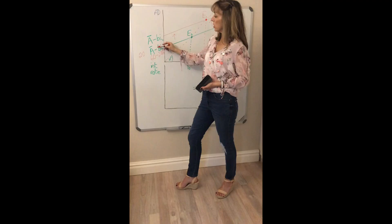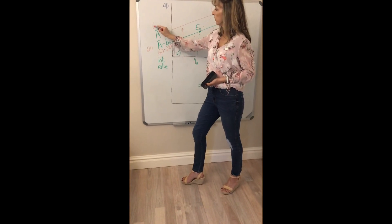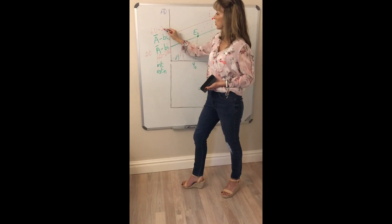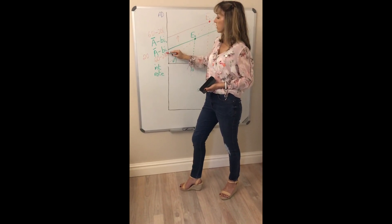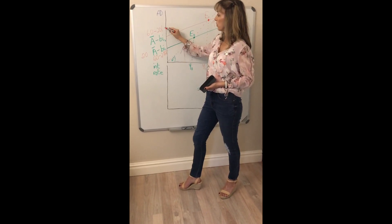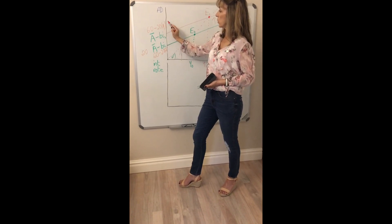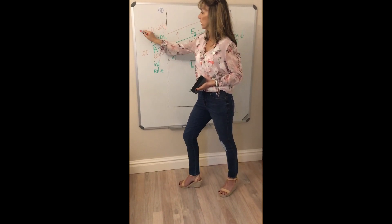After the change in interest rate nothing else is changing. You're still going to have 60 total autonomous spending and B is still going to be 20. The only difference is that the interest rate went from 2% to 1%. So you're going to have 60 minus 20 times 1 or 60 minus 20 and you're going to get a value of 40.